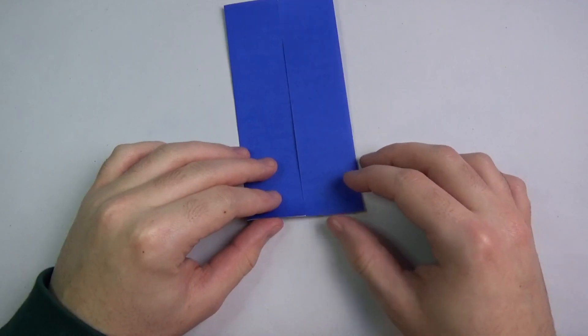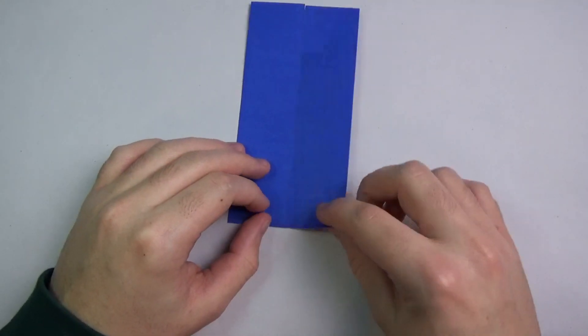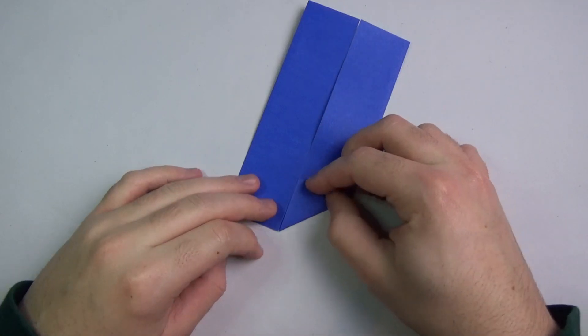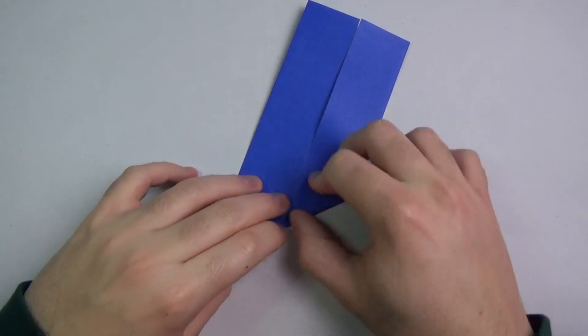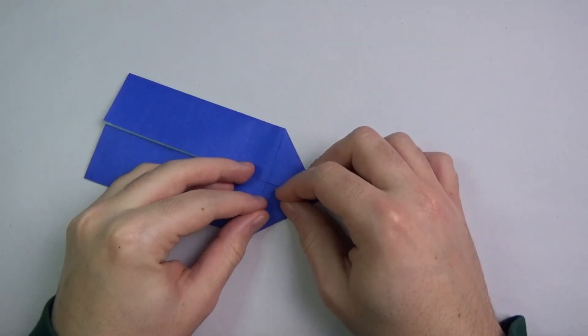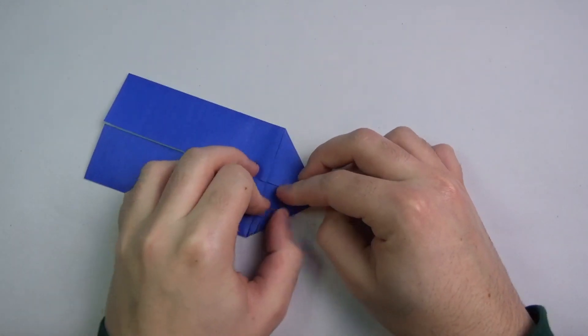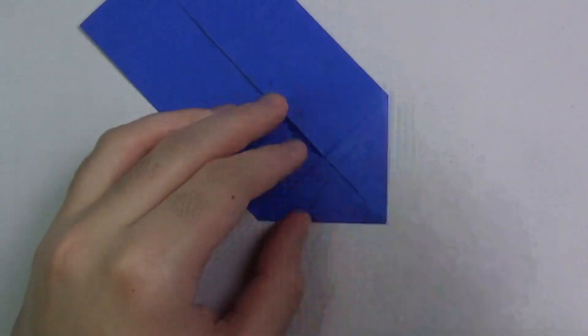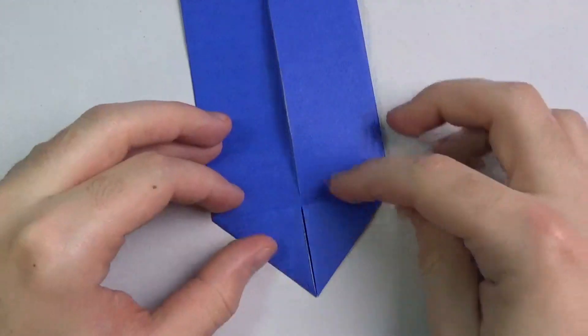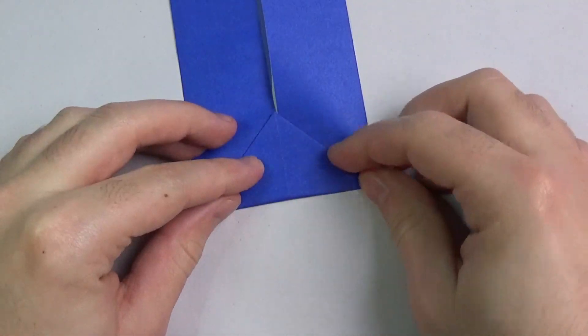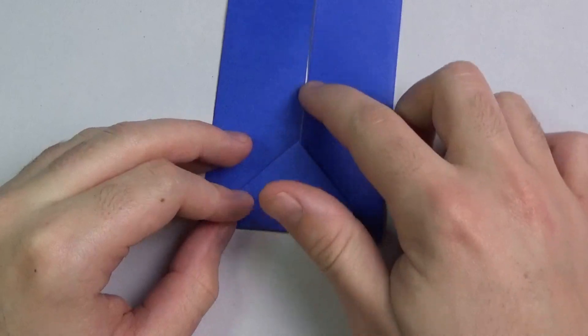So fold this edge to the middle. Alright, now take this and fold it right over the edge. And make sure that this point aligns with the middle.